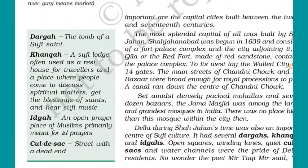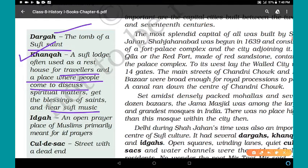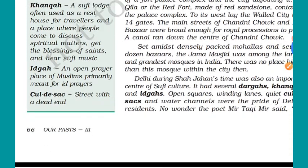Key terms: A Dargah is the tomb of a Sufi saint. A Khanka is a Sufi lodge, often used as a rest house for travelers and a place where people come to discuss spiritual matters, receive blessings of saints, and hear Sufi music. Idgahs were open prayer places for Muslims, primarily used for Eid prayers. A cul-de-sac is a street with a dead end — a closed street.